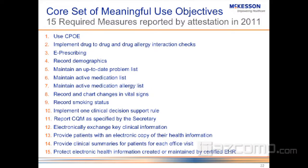Looking at the actual 15 core objectives — these are the ones you absolutely have to do. For example, the second one is to implement drug-to-drug and drug-allergy interaction checks. The measurement is that the eligible provider has enabled the functionality for the entire reporting period. That means you've turned it on, your system has it, and your product performs a drug-to-drug and drug-allergy interaction check. That's a pretty easy measurement.